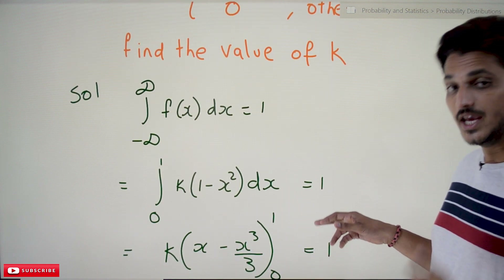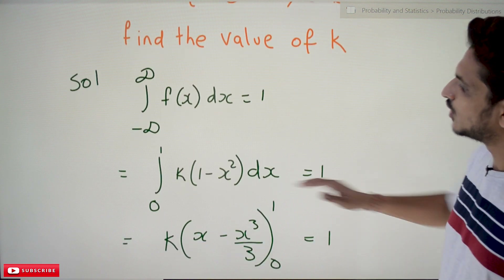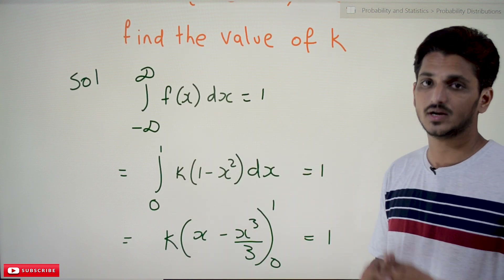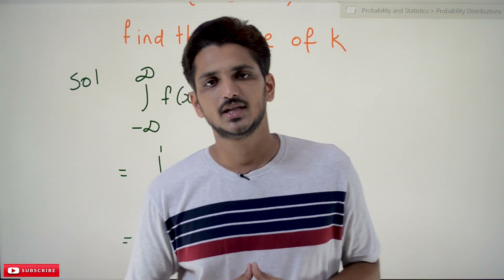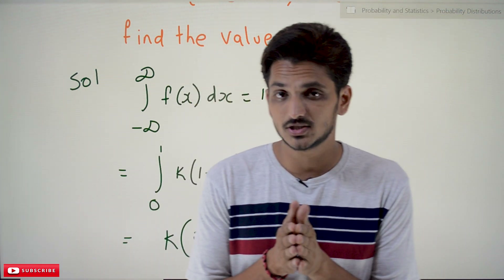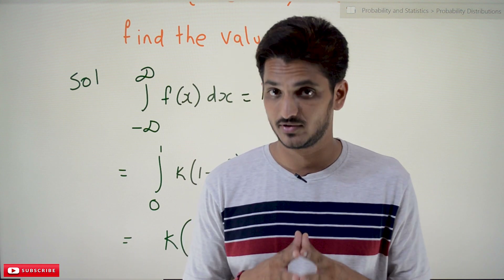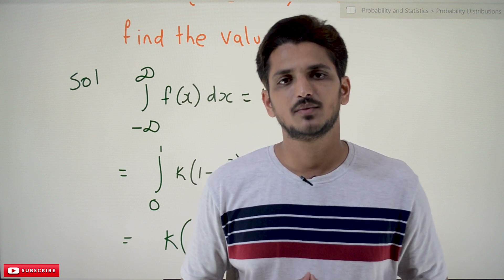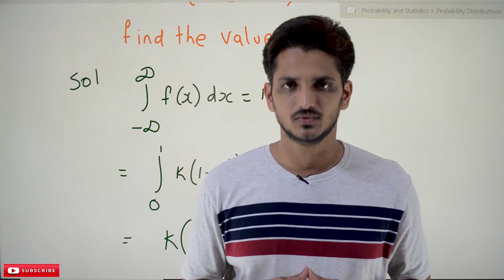This is how we use integration with continuous probability density functions to find probability values in a distribution. Hope you understand the concept. If you have any questions, please post them in the comment section below. Thanks for watching — if you haven't subscribed to our channel, please subscribe and press the bell icon for the latest updates. Thank you.